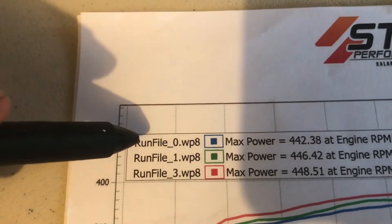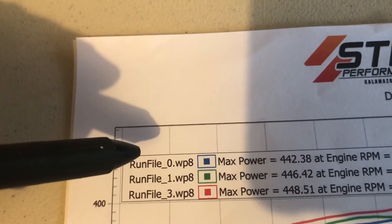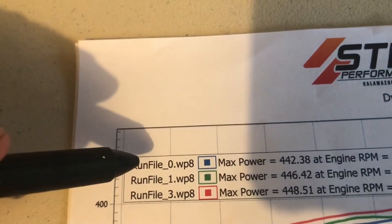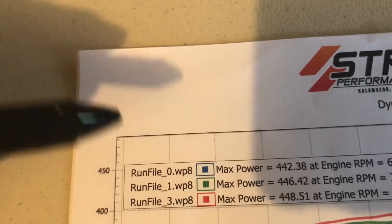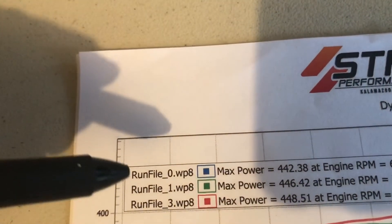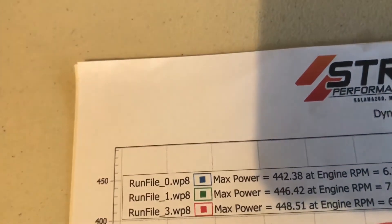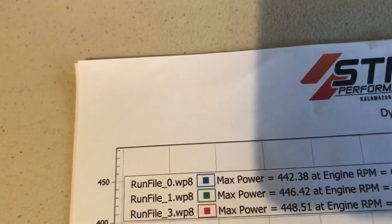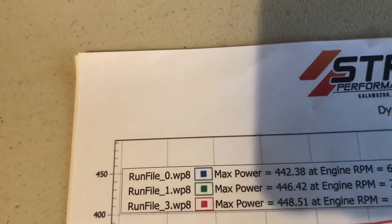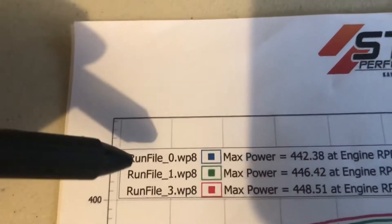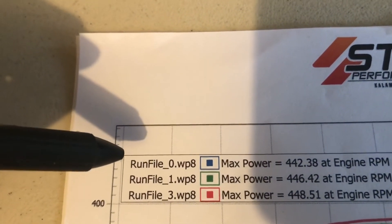Dynojet has standardized the industry — you go to any Dynojet running Winpep 8 software, it has to be version 8, and you will run the same number whether you're testing in Chicago or Kalamazoo. The other software running Winpep 7 is the one with the inflated numbers by 12%.